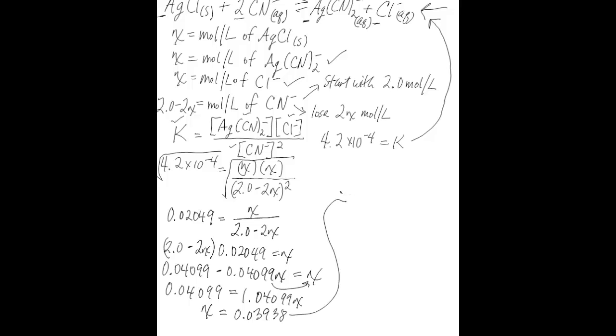So the answer to this question is that the solubility of silver chloride in this solution is going to be equal to X because this is how we've defined solubility of silver chloride. It's equal to X moles per liter. So we've just solved for X, so all we need to do is round that to significant figures. And the solubility of silver chloride is 0.039 molar. So that's our answer. Thank you.